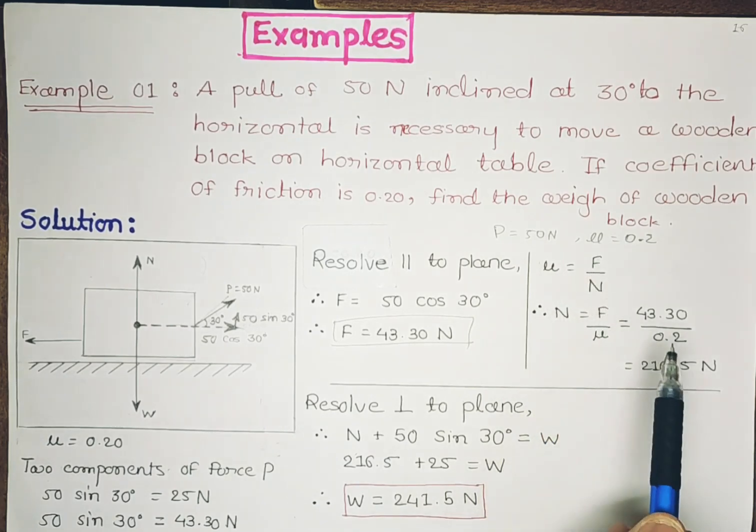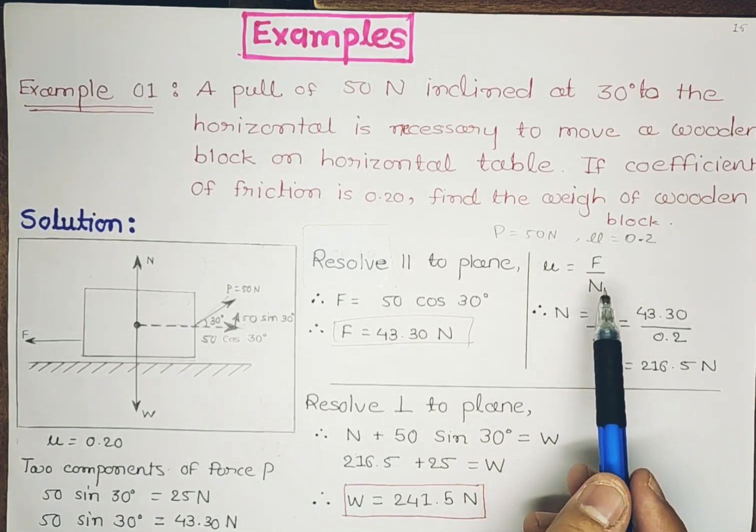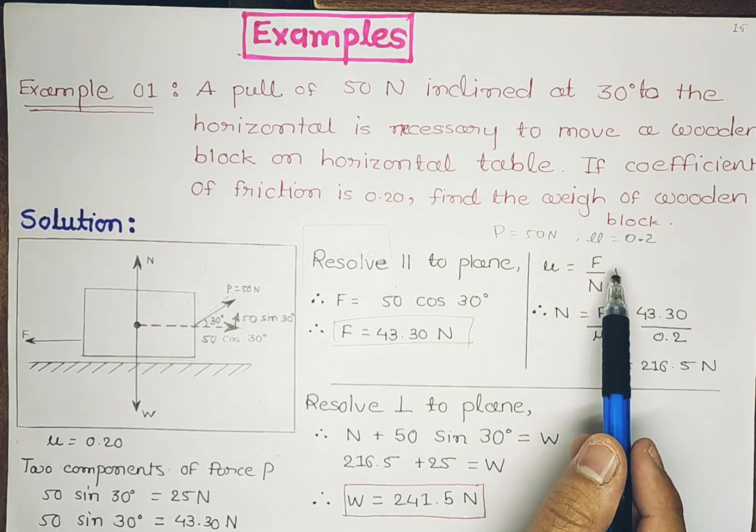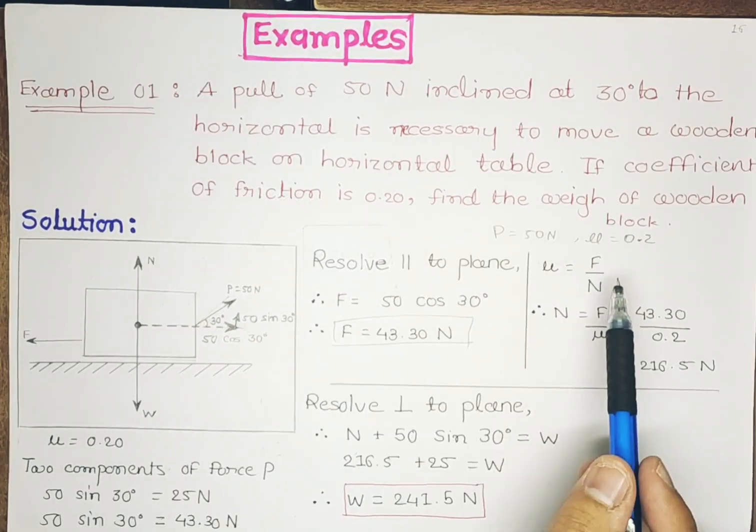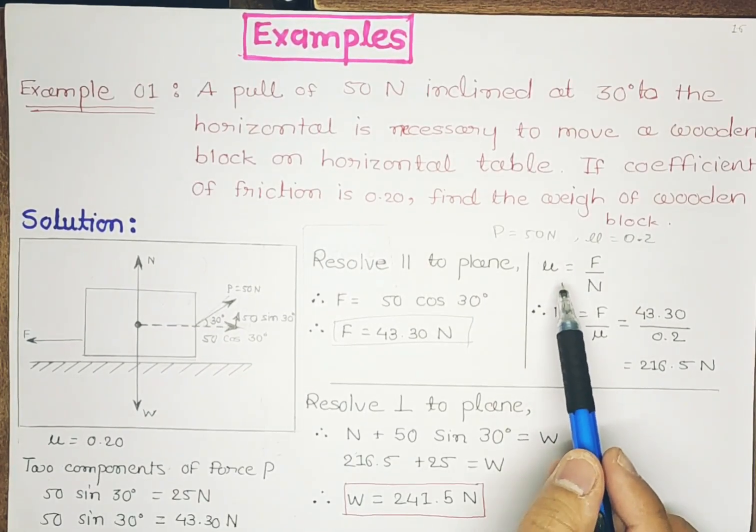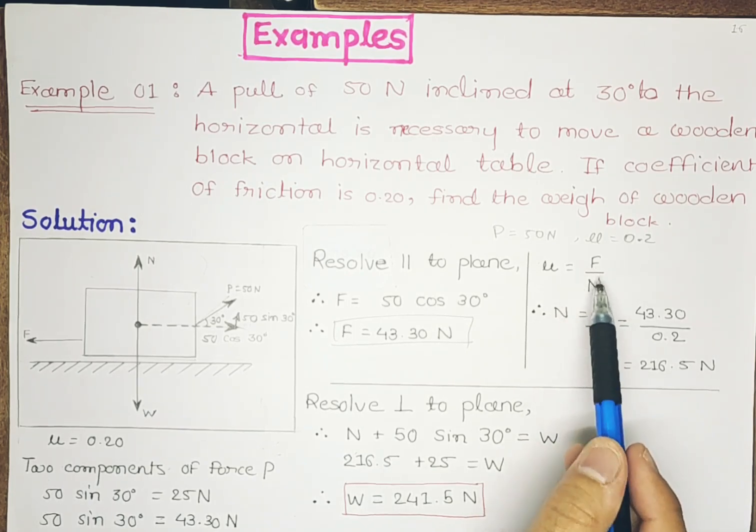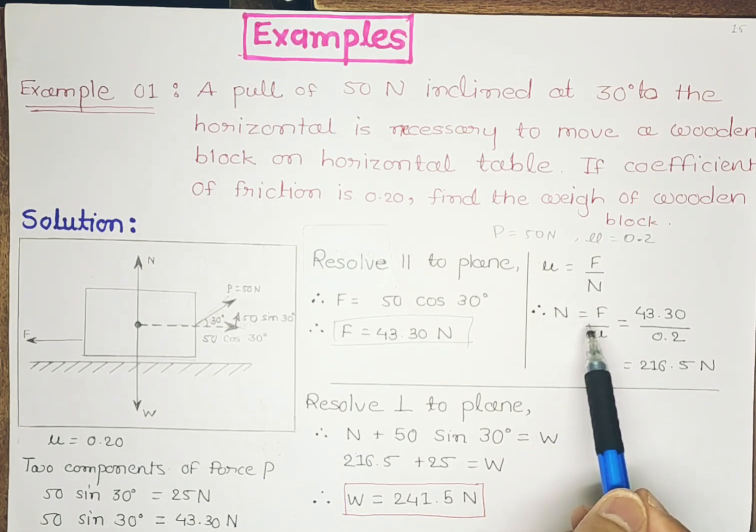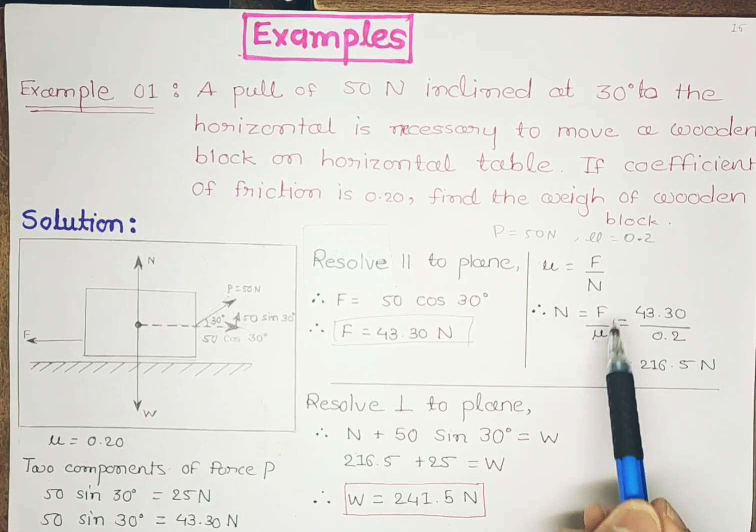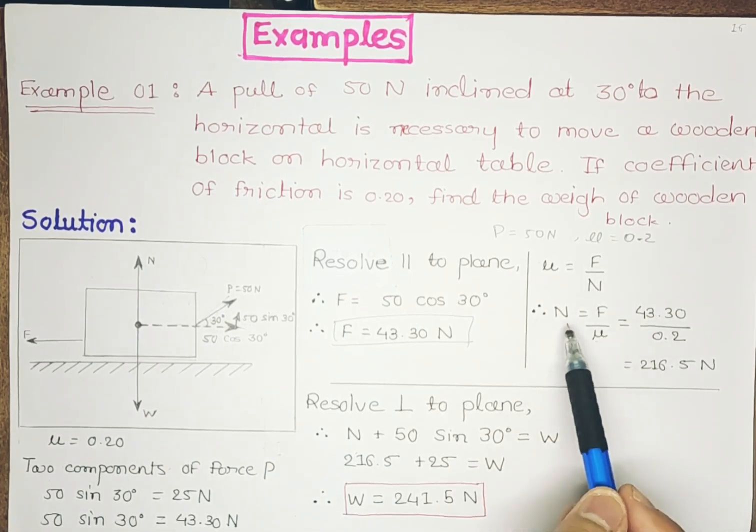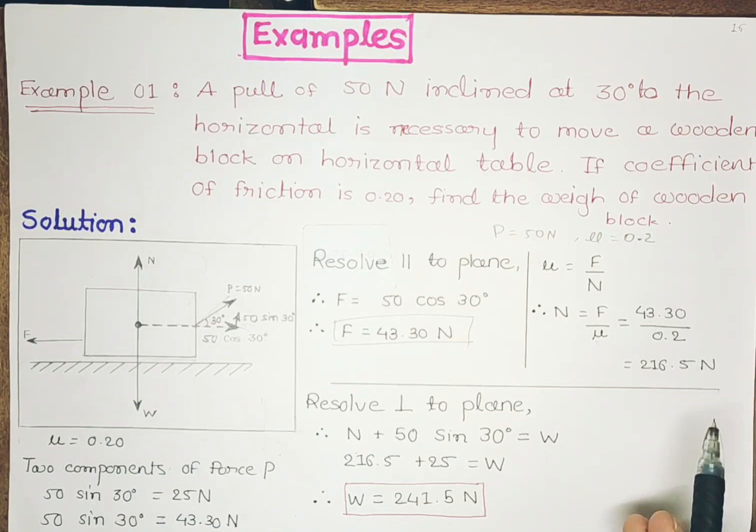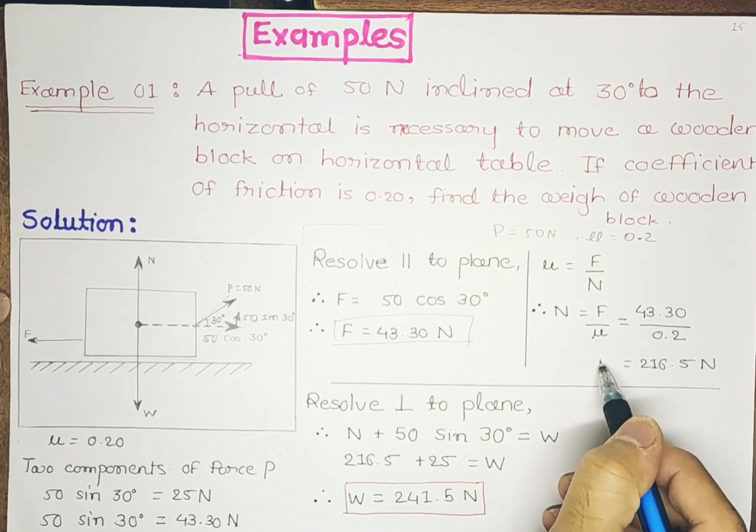Now coefficient of friction μ is equal to F by N, but we have the value of F and value of μ. So we can get the value of N, that is normal reaction. N is equal to F by μ. Value of F that we found out and μ is given in the question, so N is equal to 216.5 Newton.